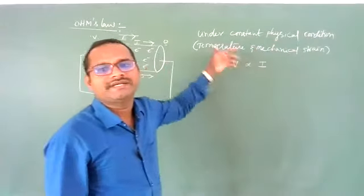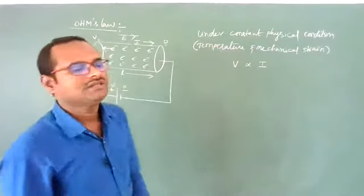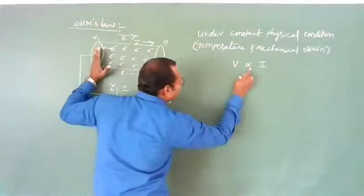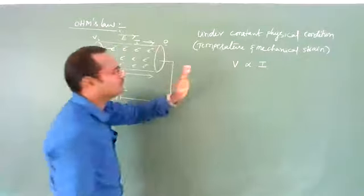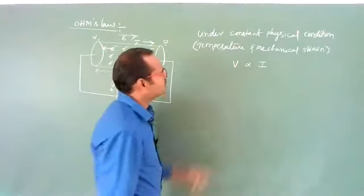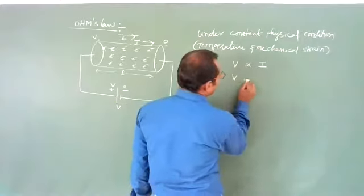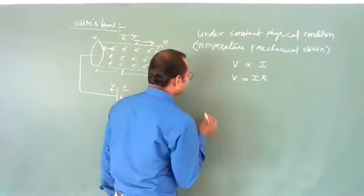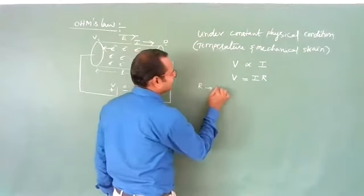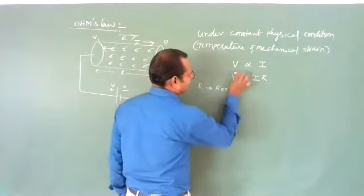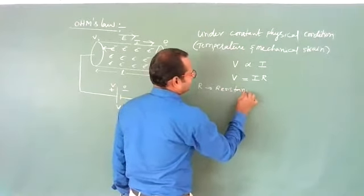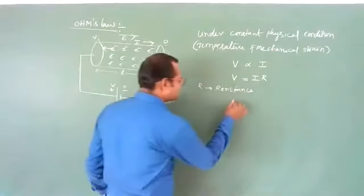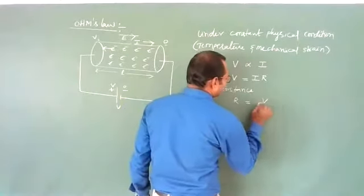To remove the proportionality constant, we introduce R, where R is the resistance of the wire. So V is proportional to I, and V = IR, which gives R = V/I. Resistance is the opposition to the flow of current — electrons collide with positive ions of the crystal lattice while accelerating, and their motion is opposed. That inherent property to oppose the flow of electrons is called resistance.